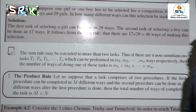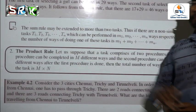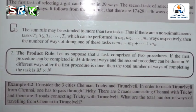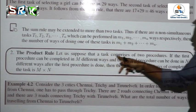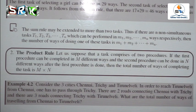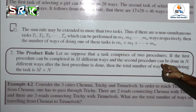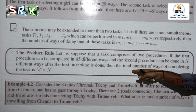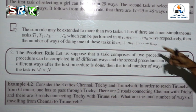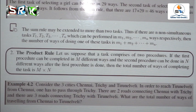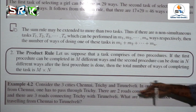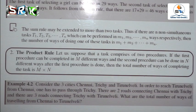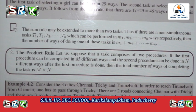Product Rule: suppose a task comprises two procedures. If the first procedure can be completed in m different ways and the second procedure can be done in n different ways after the first is done, then the total number of ways of completing the task will be m × n.